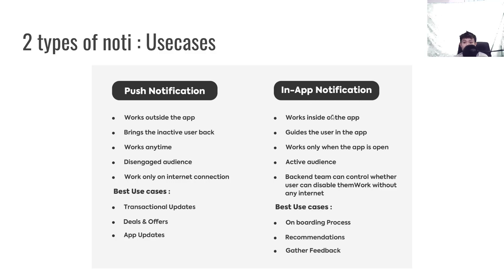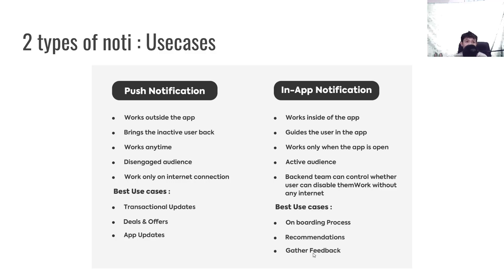For in-app notification, it works inside the app and you can send notifications without an internet connection. For example, Duolingo can set a timer to send a daily reminder for users to do their exercise — no internet needed. It also works well for onboarding processes, recommendations like YouTube, and gathering feedback. For example, after finishing a ride-hailing booking, an in-app notification can prompt the user to leave a review or give a tip to the driver immediately.